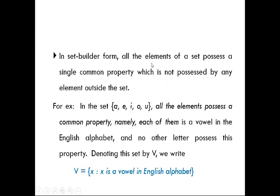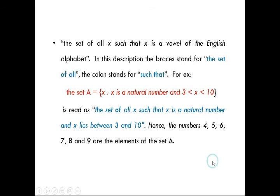In set builder form, all elements of a set possess a single common property which is not possessed by any element outside the set. For example, in the set {a, e, i, o, u} all elements are vowels in the English alphabet, and no other letter possesses this property. So we write: V = {x : x is a vowel in the English alphabet}.